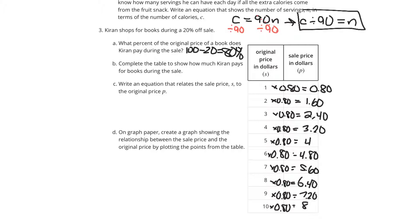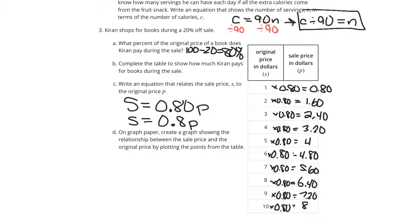Write an equation that relates the sale price S to the original price P. Our sale price S is going to equal 80% of the original price P. You might also see it written as S equals 0.8P or eight-tenths P. Both equations work — 0.80 and 0.8 are the same value.